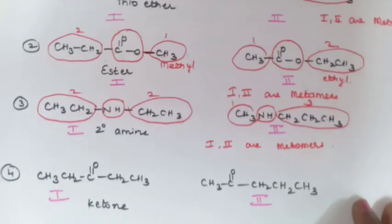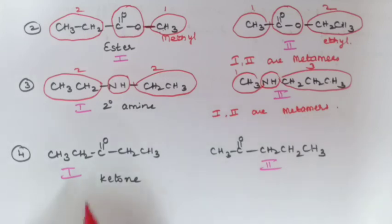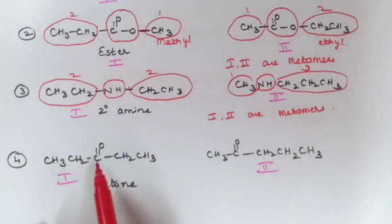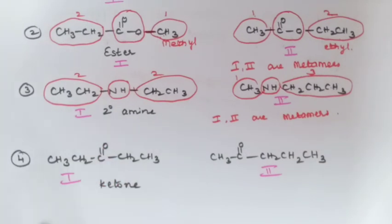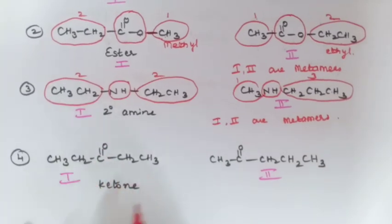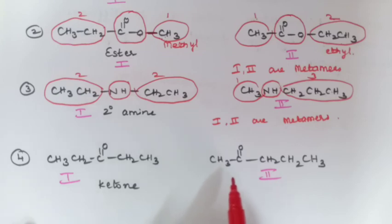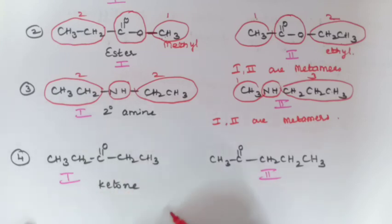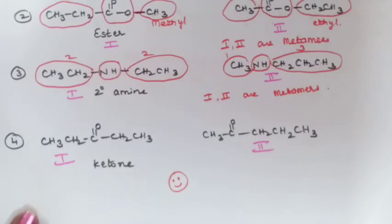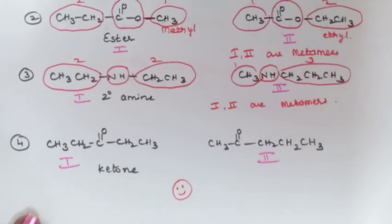Moving to the fourth example: this is a ketone, with a C double bond O. Students, I will leave this for you to work out — check whether they are metamers or not, and write your answer in the comment box. Stay happy students, have a good day. Bye, I will meet you in the next video.